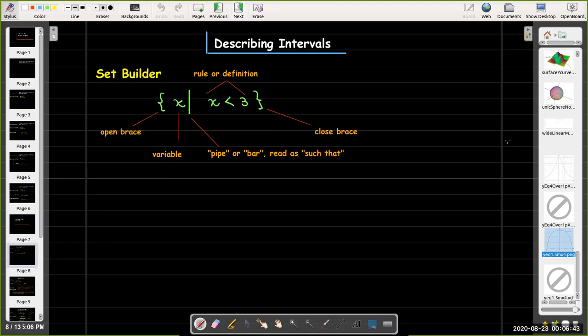One way is called set builder notation. In set builder notation, we use braces to enclose the description of the set. So typically you start with a variable, followed by a short vertical line, which is called a pipe or a bar, and you read that as such that.